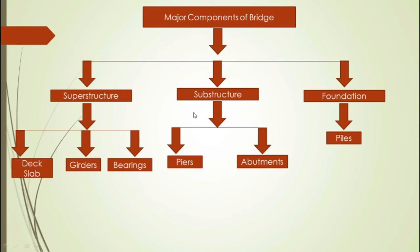Next is the substructure. The substructure members transfer the load received from the superstructure onto the foundation. The substructure includes piers and abutments. The foundation mainly used in bridge engineering is the pile foundation or the well foundation.